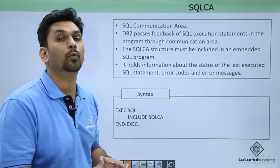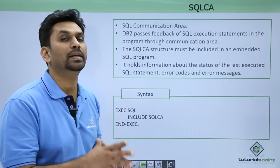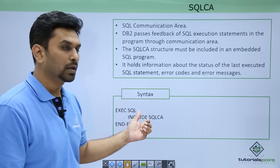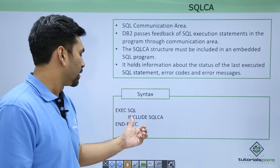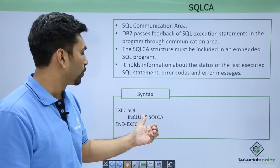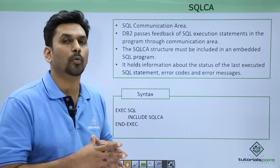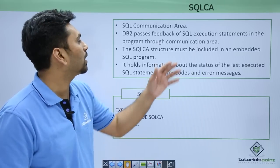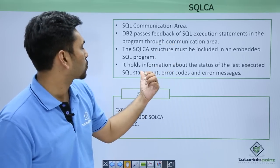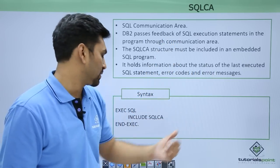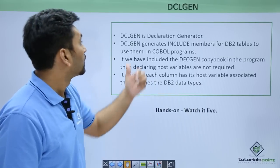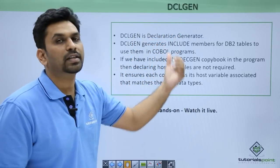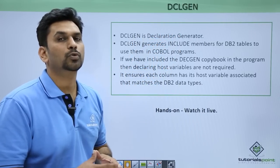To declare an SQL CA communication area in a COBOL program, you first write EXEC SQL and then END-EXEC. These two statements are mandatory to embed any SQL statement in a COBOL program. Here we are including SQL CA — it's a kind of copybook that will be used by the program to hold status codes, error codes, or error messages.